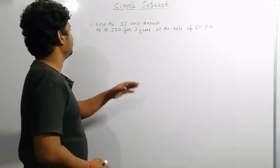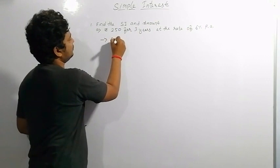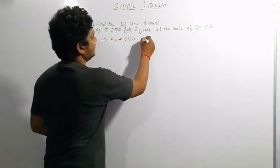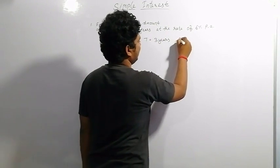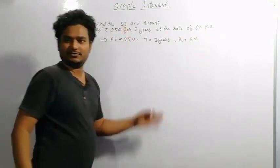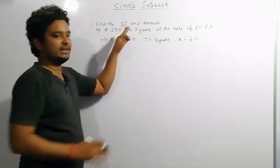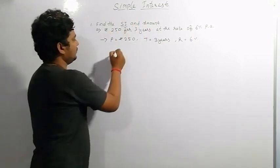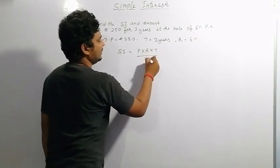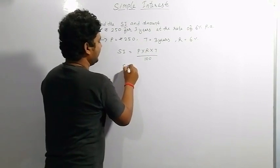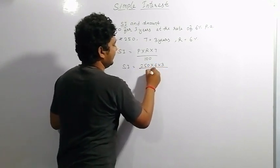Now we are coming to the exercise. Find the simple interest and amount. The data given is: principal P equals rupees 250, time is 3 years, and rate of interest is 6%. To solve, we first calculate simple interest using the formula: SI equals principal into rate into time divided by 100.